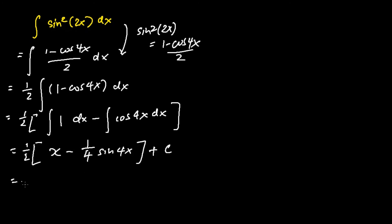Last but not least, I multiply the half into the two terms. I will get half x subtracting away 1 over 8 sine 4x plus c. And this is the final answer to the integration of sine squared 2x dx.